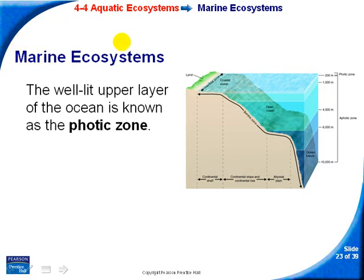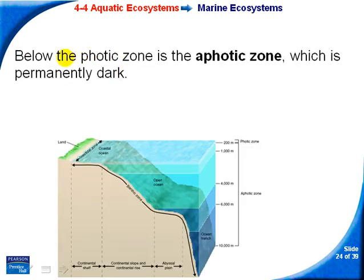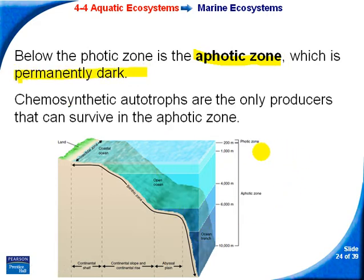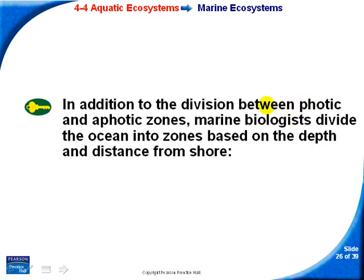Now let's look at marine ecosystems. Light is a huge factor — the upper layer of the ocean is called the photic zone, a very thin sliver at the very top where algae and other producers can grow. Below that is the aphotic zone, which is permanently dark. Photosynthesis cannot occur there, so you only find chemosynthetic autotrophs in the aphotic zone.